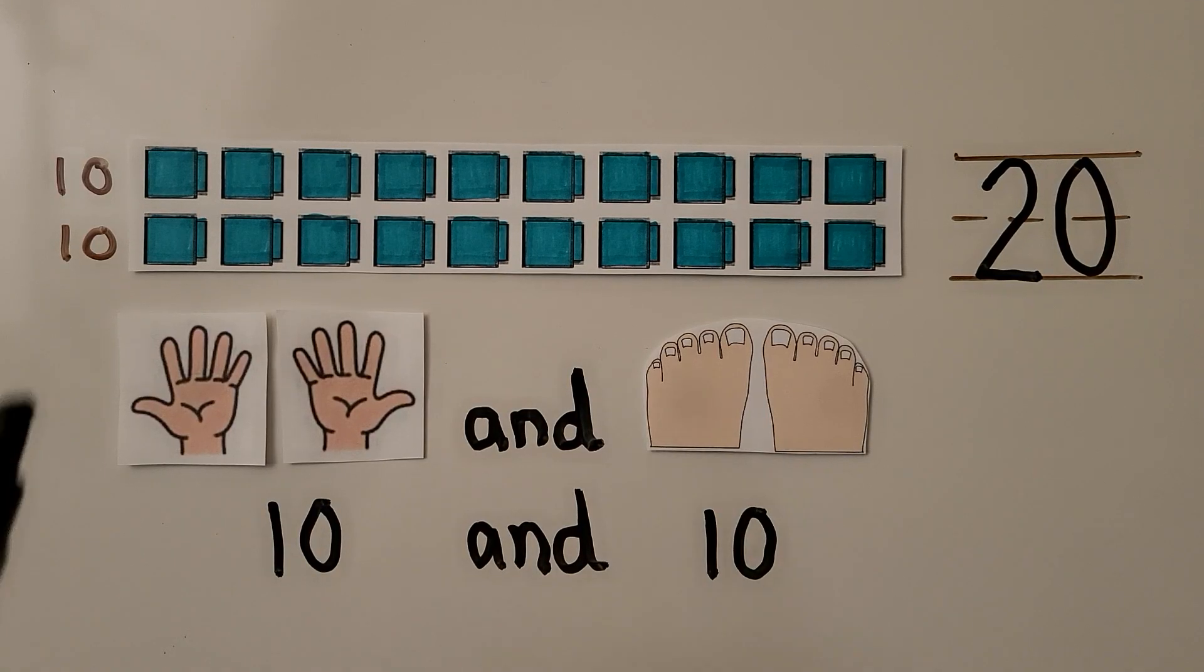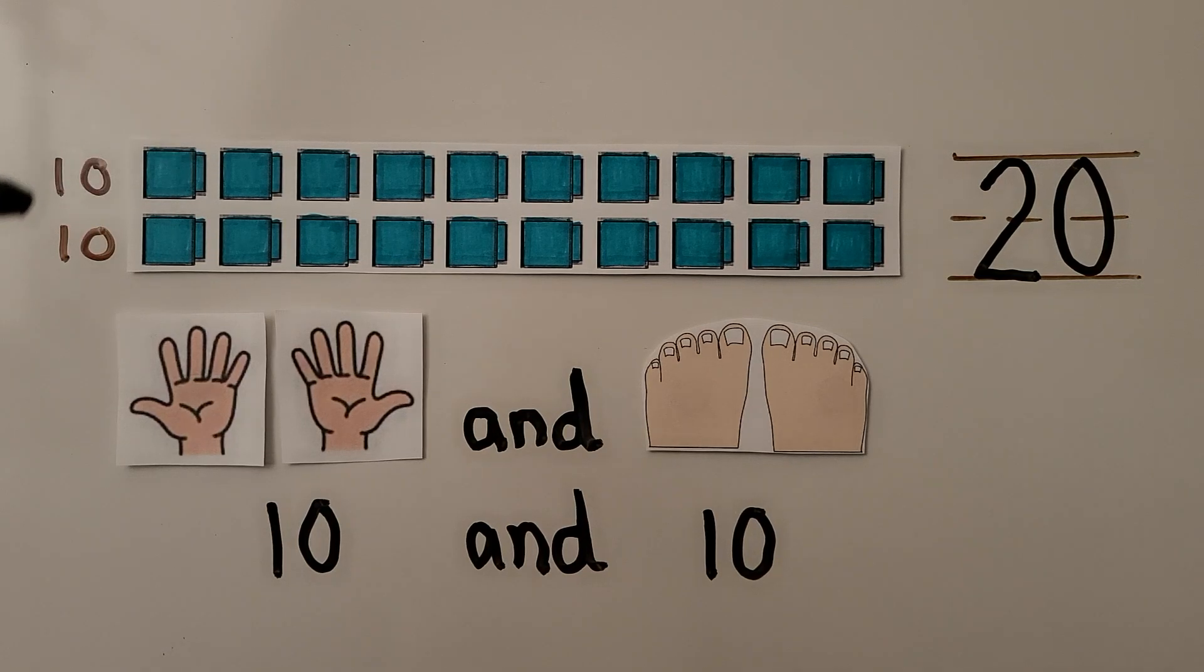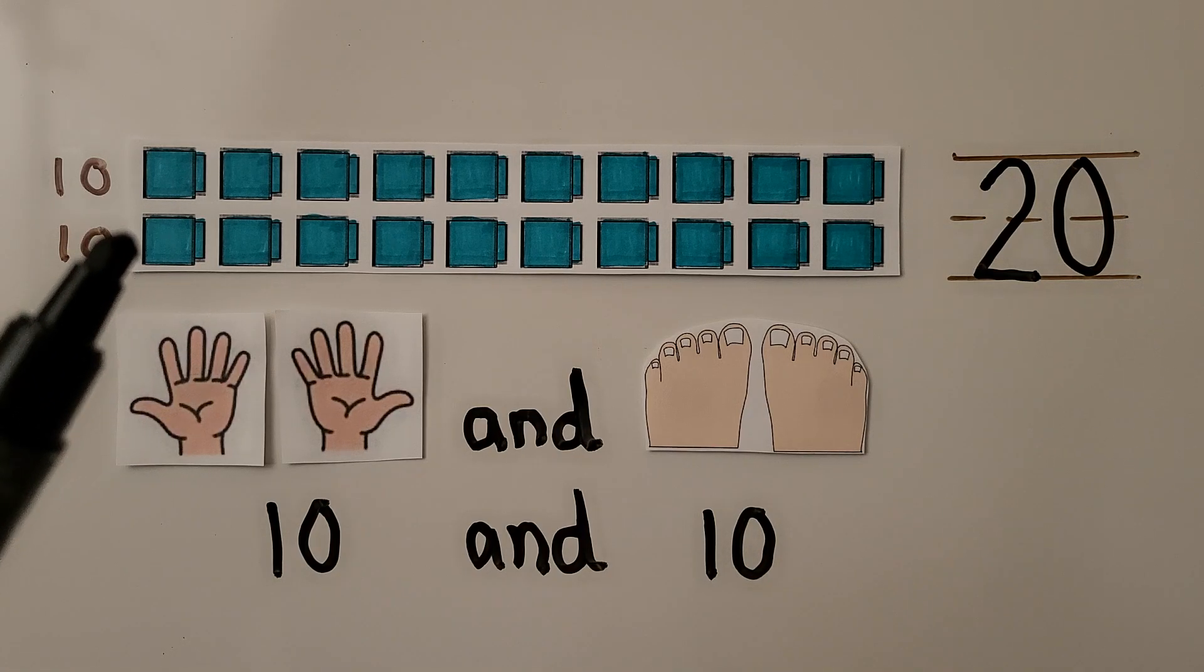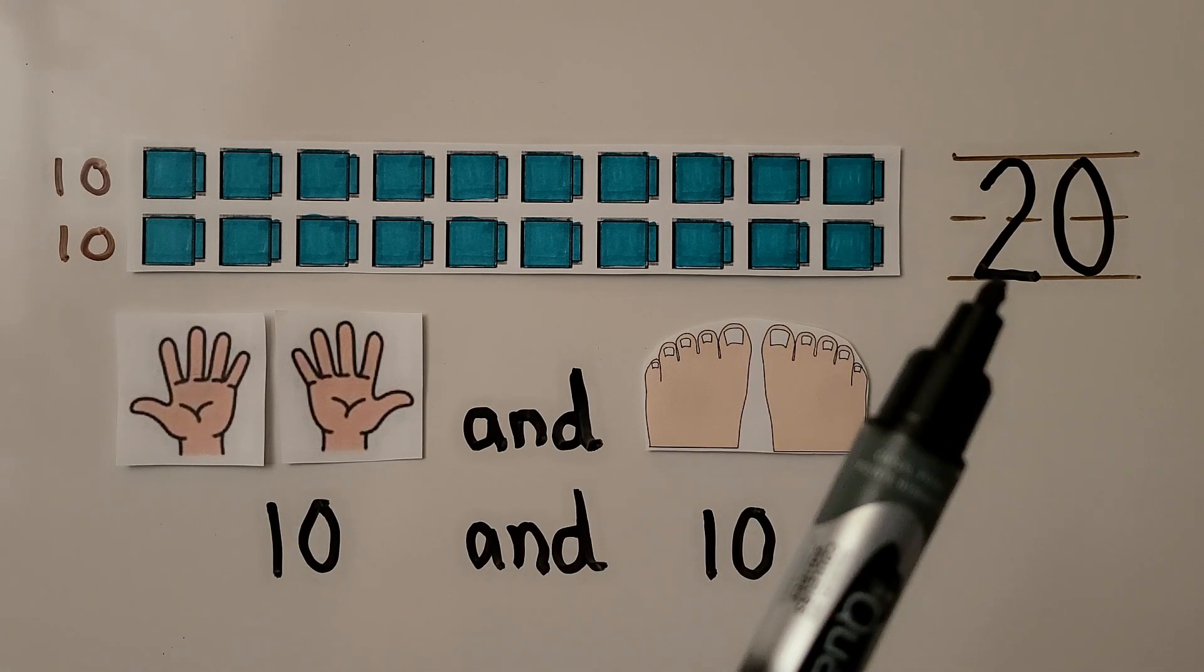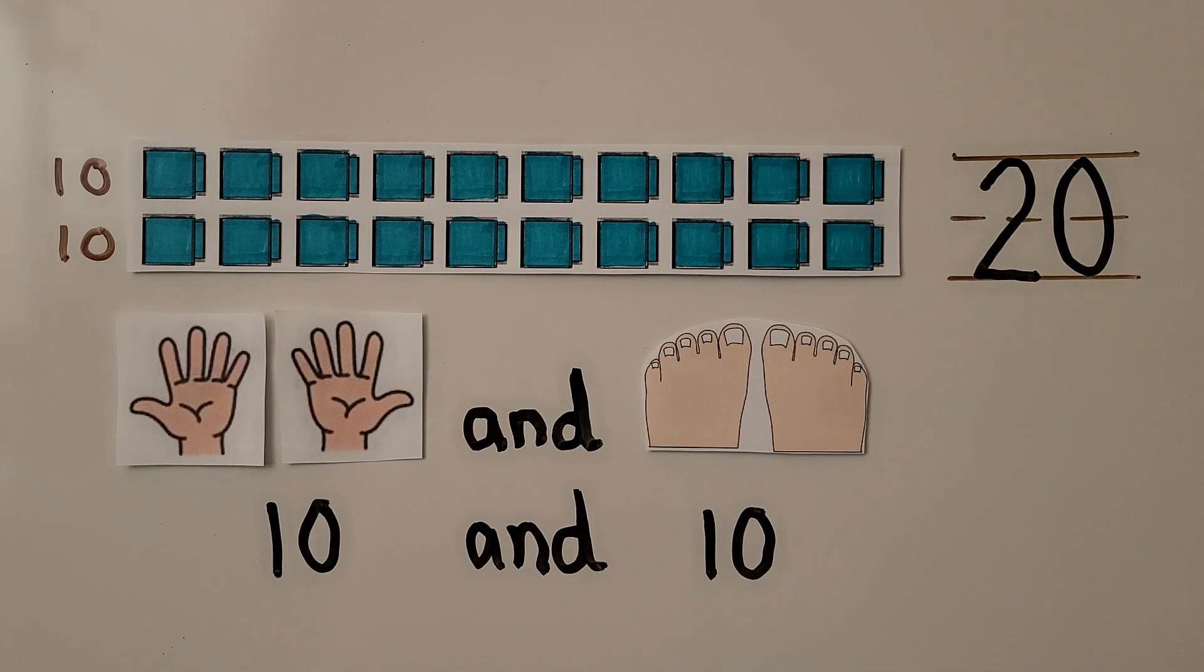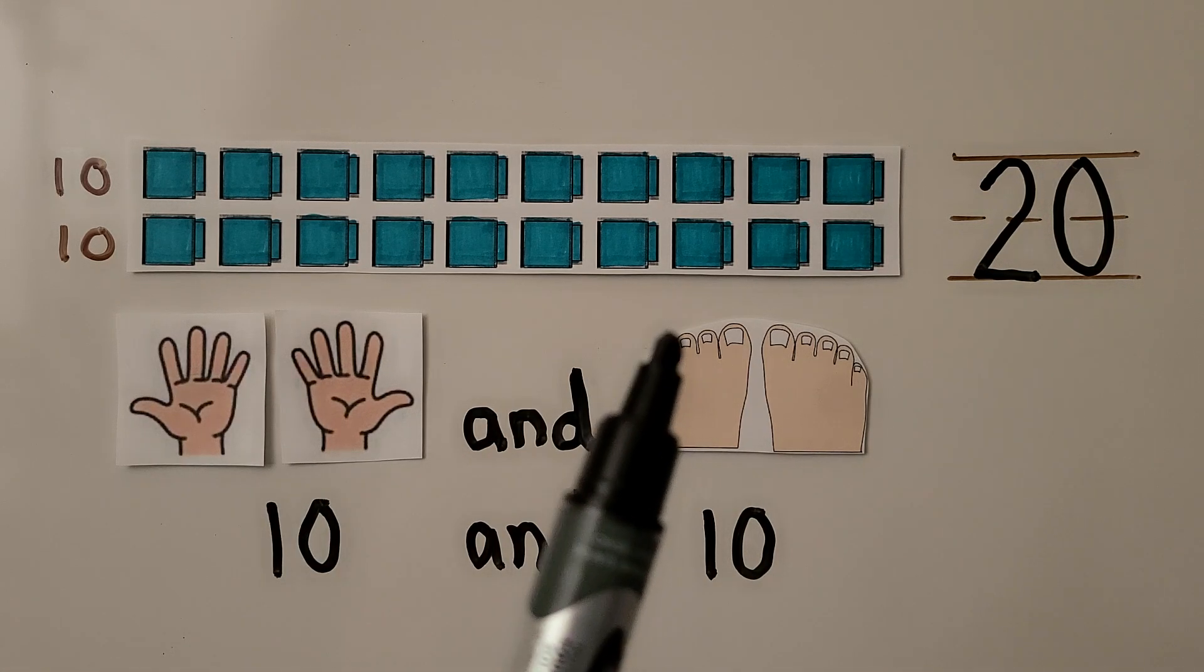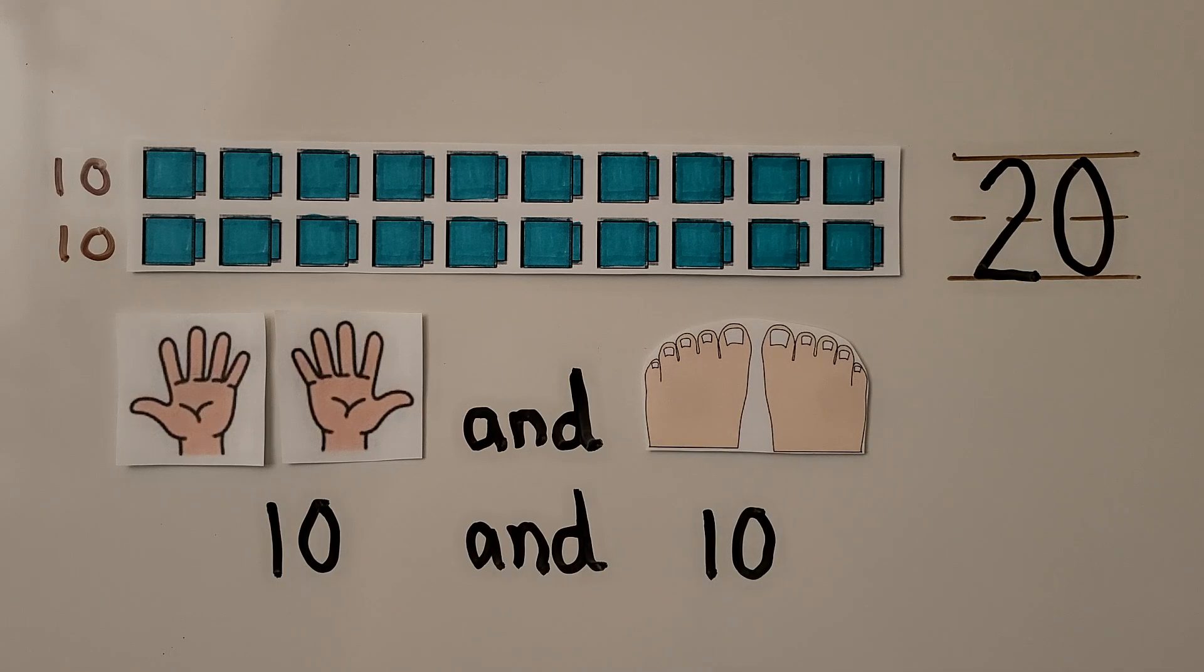Here are some blue cubes. We have 10 cubes in the top row and 10 cubes in the bottom row. 10 ones and 10 more ones is 20. It's a 2 with a 0 next to it for 20. There are two tens in 20. It would be counting all of your fingers and all of your toes for 20.